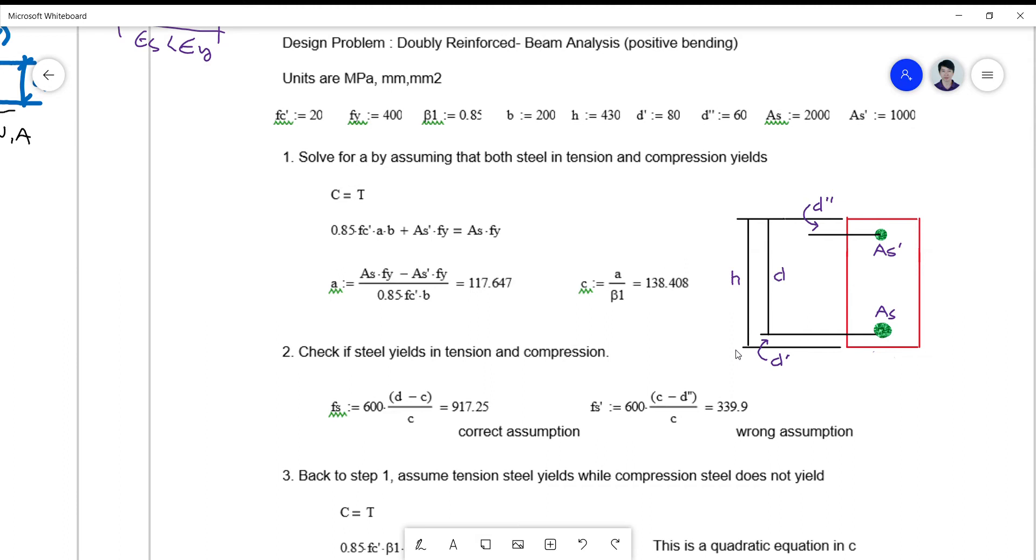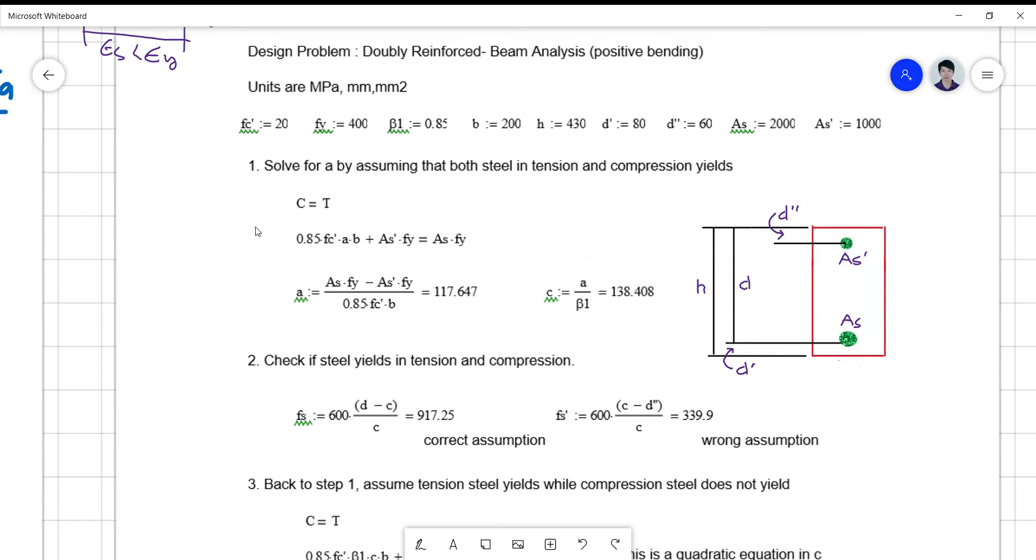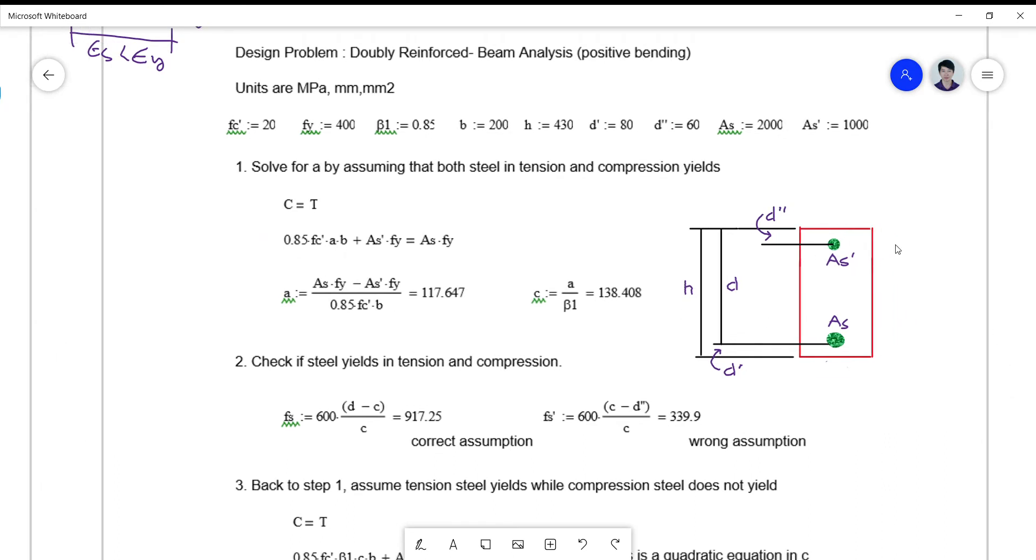I told you the purpose of a T-beam on positive bending is to add additional or to provide additional compression strength. This is true with the DRB problem wherein we are providing additional compression strength by simply adding compression bars. The material property and the dimensions are the same - I just removed the overhanging flanges at the left and the right because this is now a normal rectangular beam.